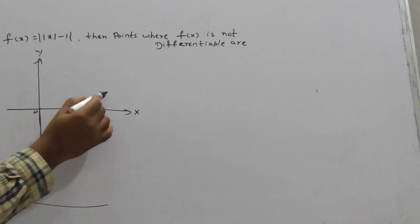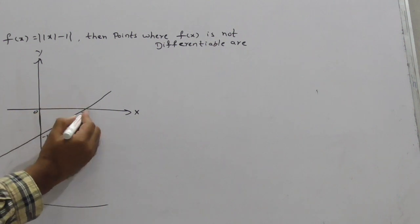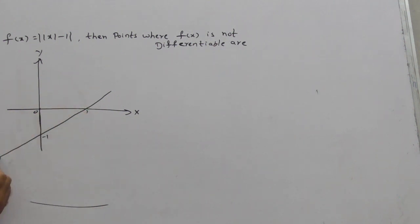y equals x minus 1, so the graph should be passing like this. This point is -1, this point is 1. This is y equals x minus 1 graph.